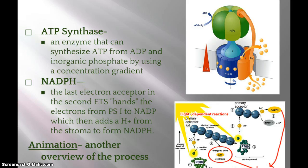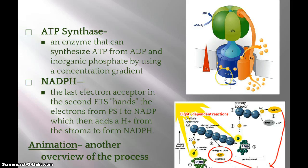The electrons reach photosystem 1, get excited by another photon, and go to another electron transport chain where they're ultimately grabbed by NAD+. Think of NAD+ as an empty taxicab — it picks up the two electrons and becomes a full taxicab, then goes to the Calvin cycle. Meanwhile, photolysis creates a bunch of hydrogen ions, forming a proton gradient. They get claustrophobic and bust a move through ATP synthase to create ATP, which also goes to the Calvin cycle.